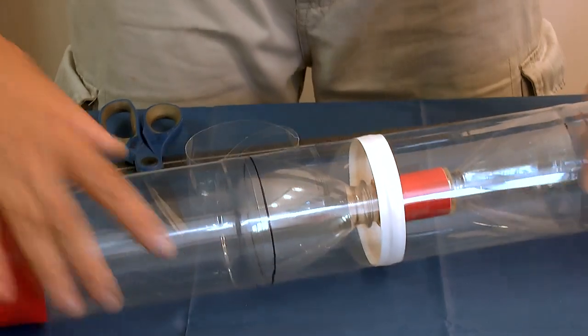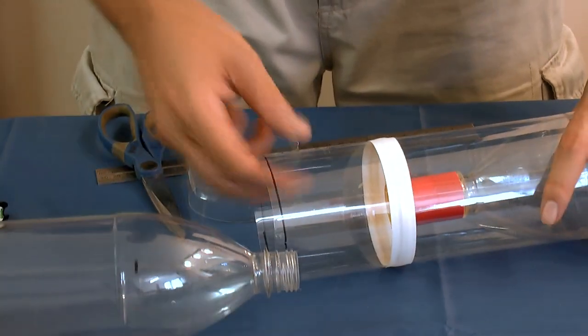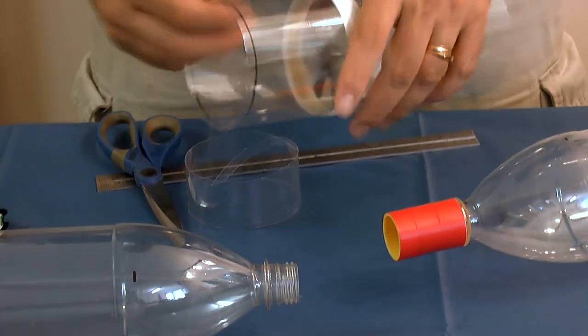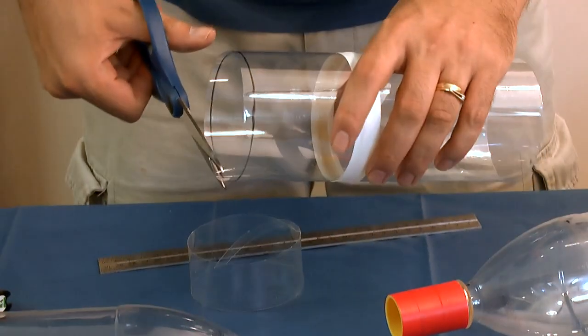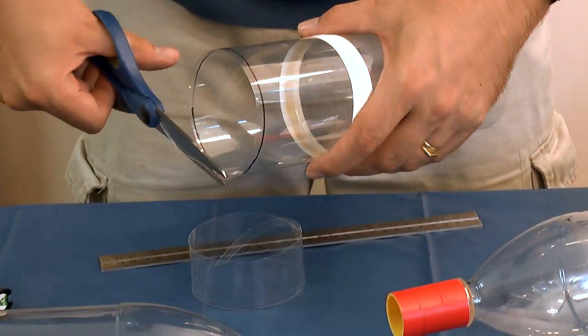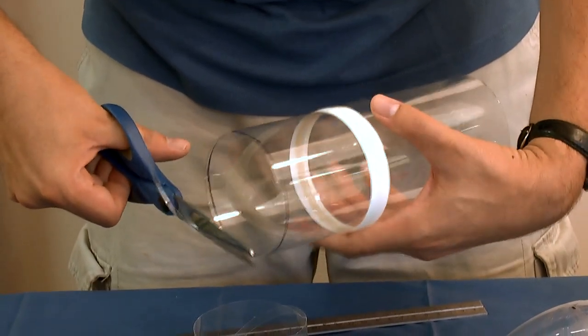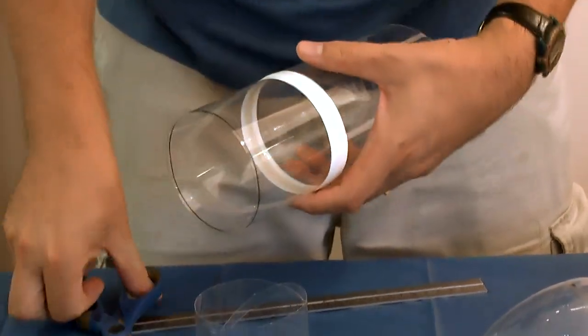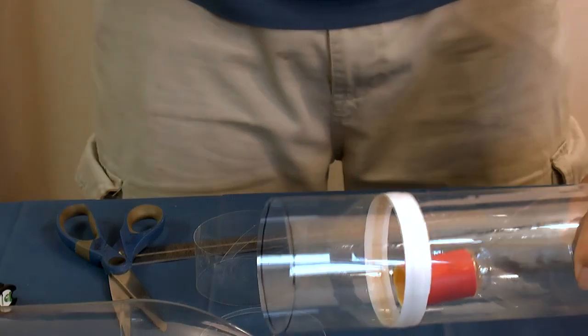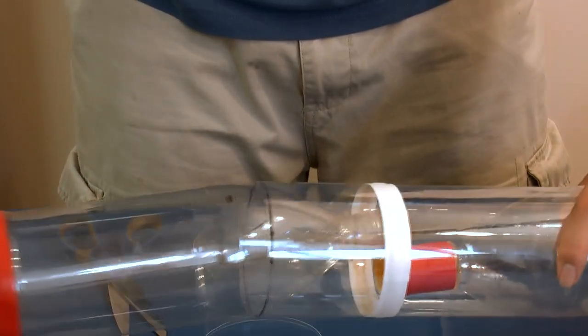If it's too tight still, trim it again until you get it right. You want the sleeve to be fairly tight so it helps keep the rocket aligned. Just keep trimming and testing until you get the right size.